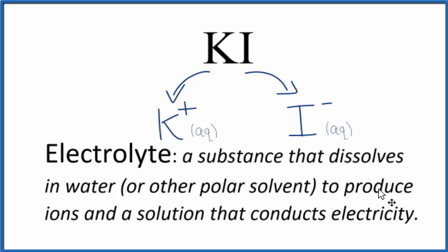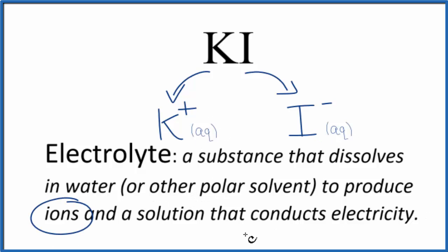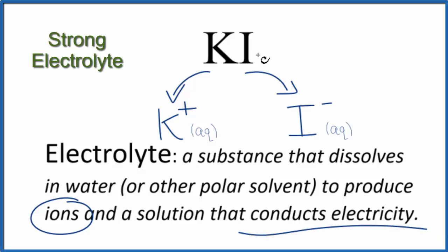So, according to our definition, we have a substance that dissolved in water — since KI is soluble — it produced ions, K+ and I−, and therefore the solution conducts electricity. KI is considered an electrolyte. In fact, it's considered to be a strong electrolyte because it breaks apart completely into K+ and I− ions.